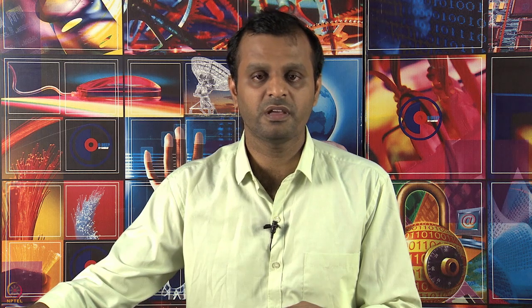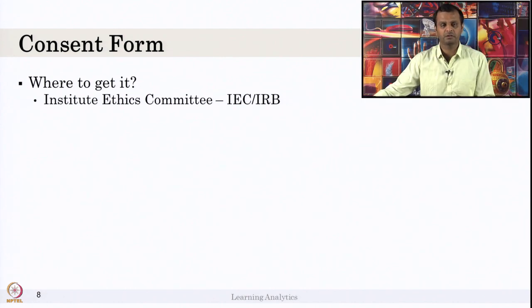Now let's talk about the consent form — where do you get it? Usually in academic institutes there will be an Institute Ethics Committee or Institutional Review Board (IRB) or IEC that will issue the consent form. If an institute does not have one, I strongly recommend talking to your institute administrators to create a committee of experienced researchers and establish a set of rules so that anyone can apply to get a consent form.